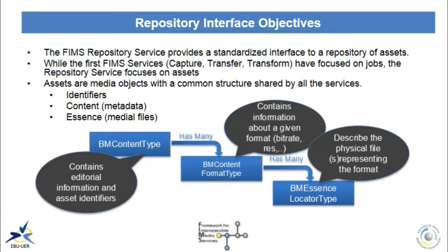The BM content object contains identifiers and editorial information. It points to multiple instances of the BM content format object, to represent the fact that the essence of an asset may exist in different formats, like a high resolution and a proxy version. The BM content format object contains information about a specific format — bitrate, resolution — and each format may point to multiple instances of the actual media files, to represent the fact that multiple copies may exist on different storage systems. The BM essence locator object describes the set of physical files, meaning the name and precise location in the file system.